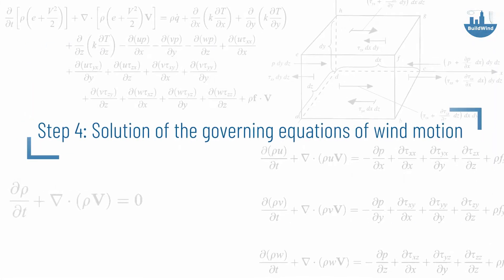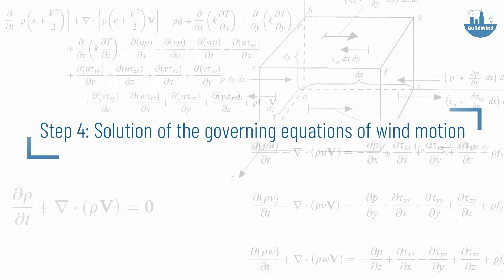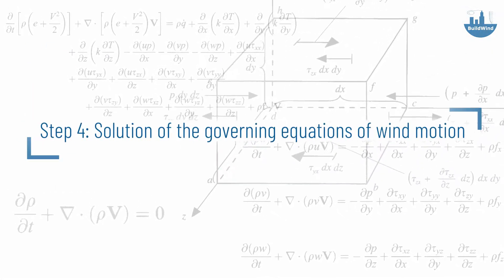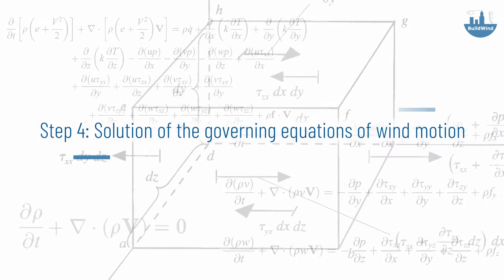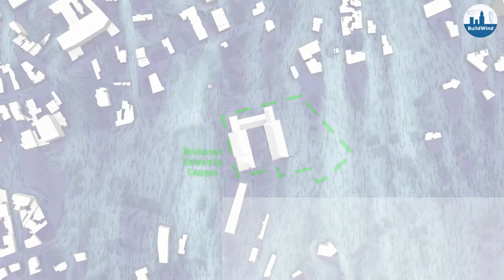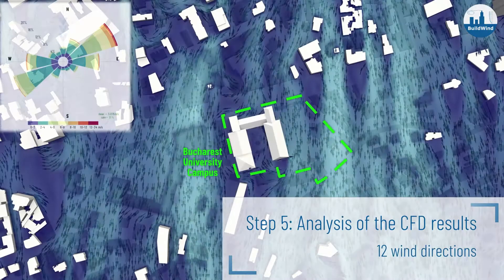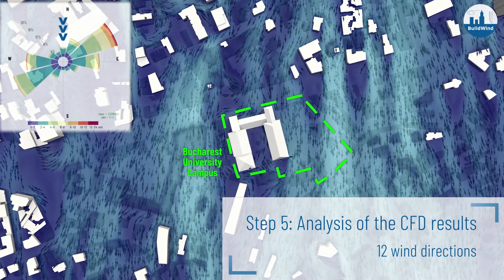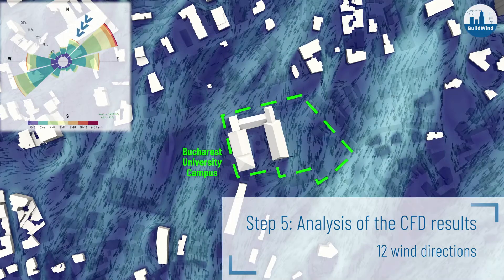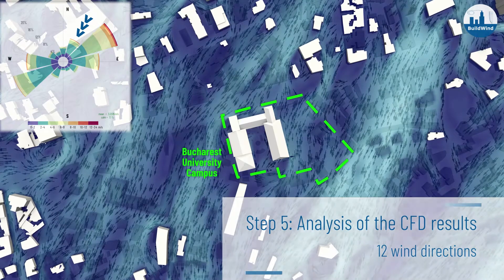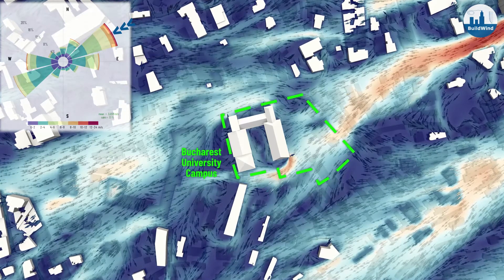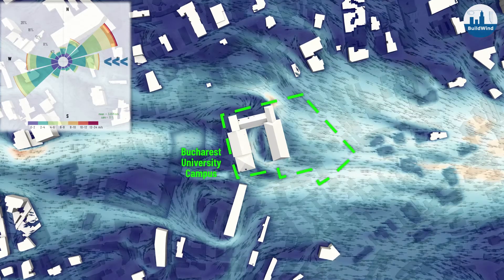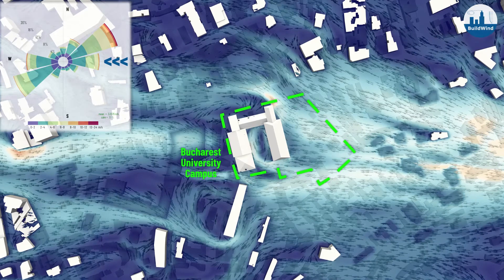The next step is the solution of the governing equations for wind motion by a computational fluid dynamics software. Solutions are calculated for a large number of combinations of wind direction and speed.